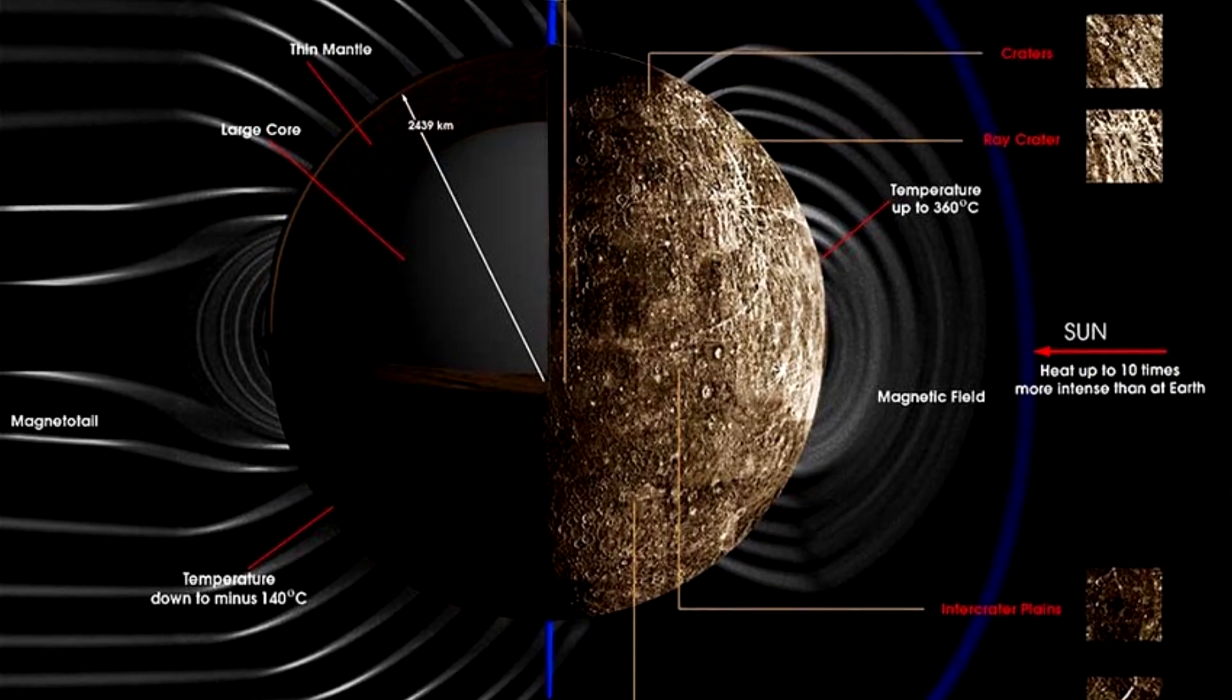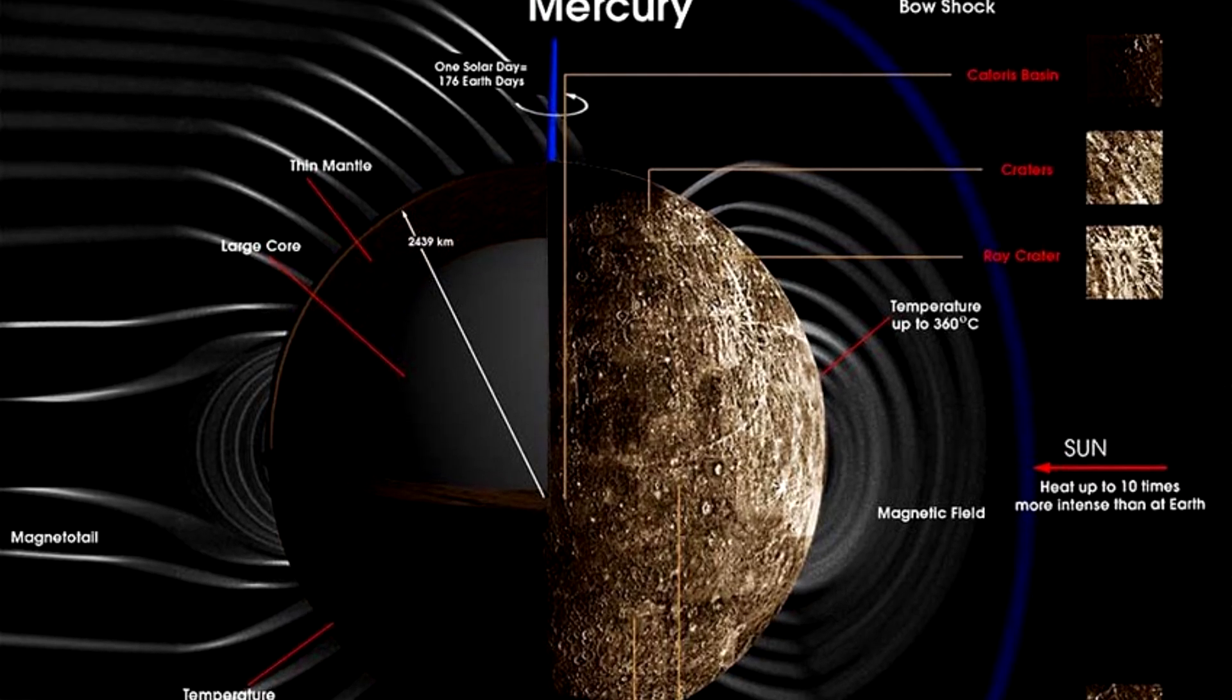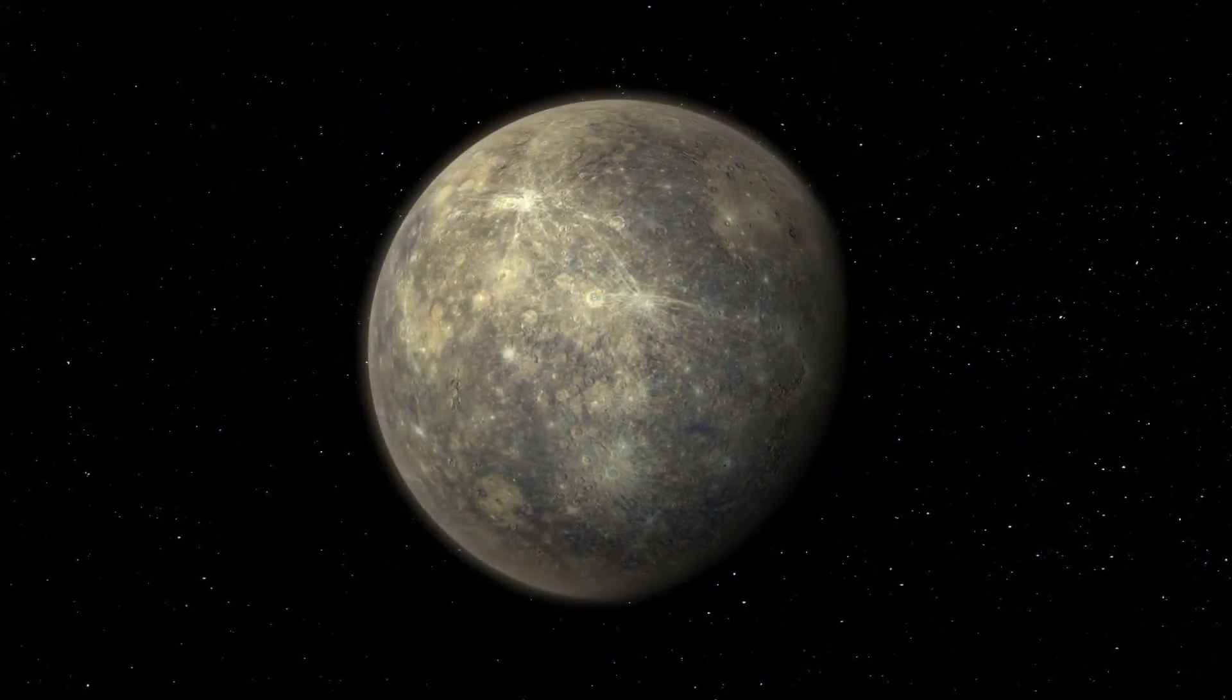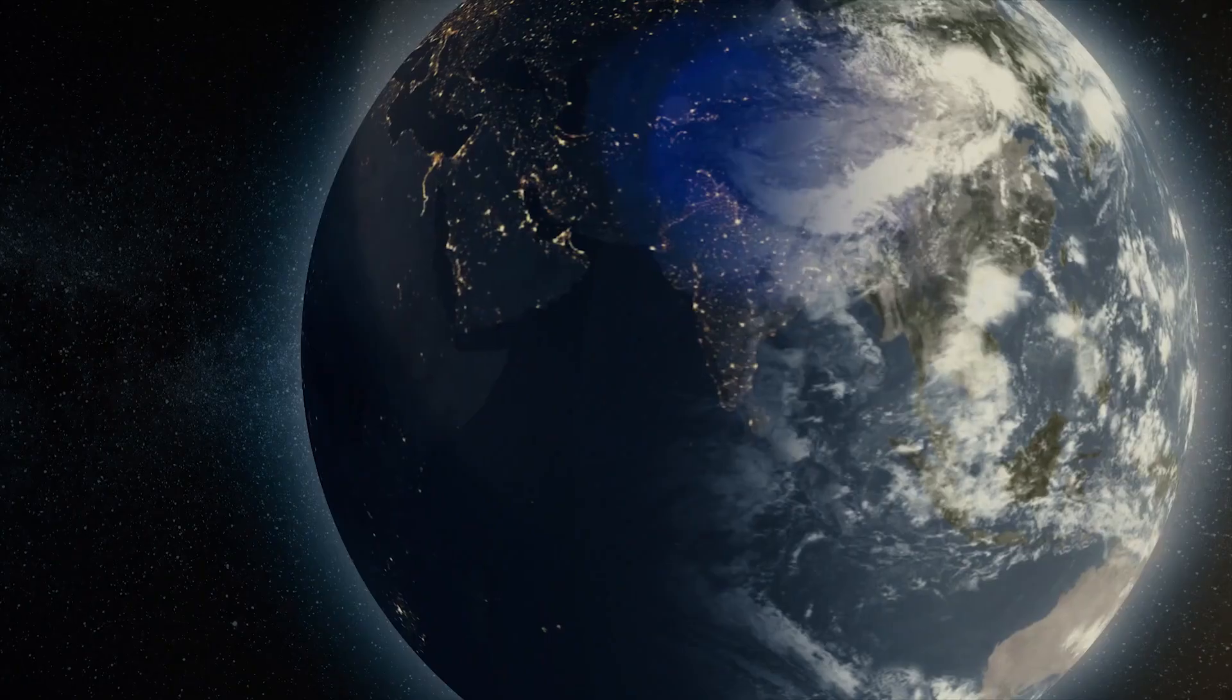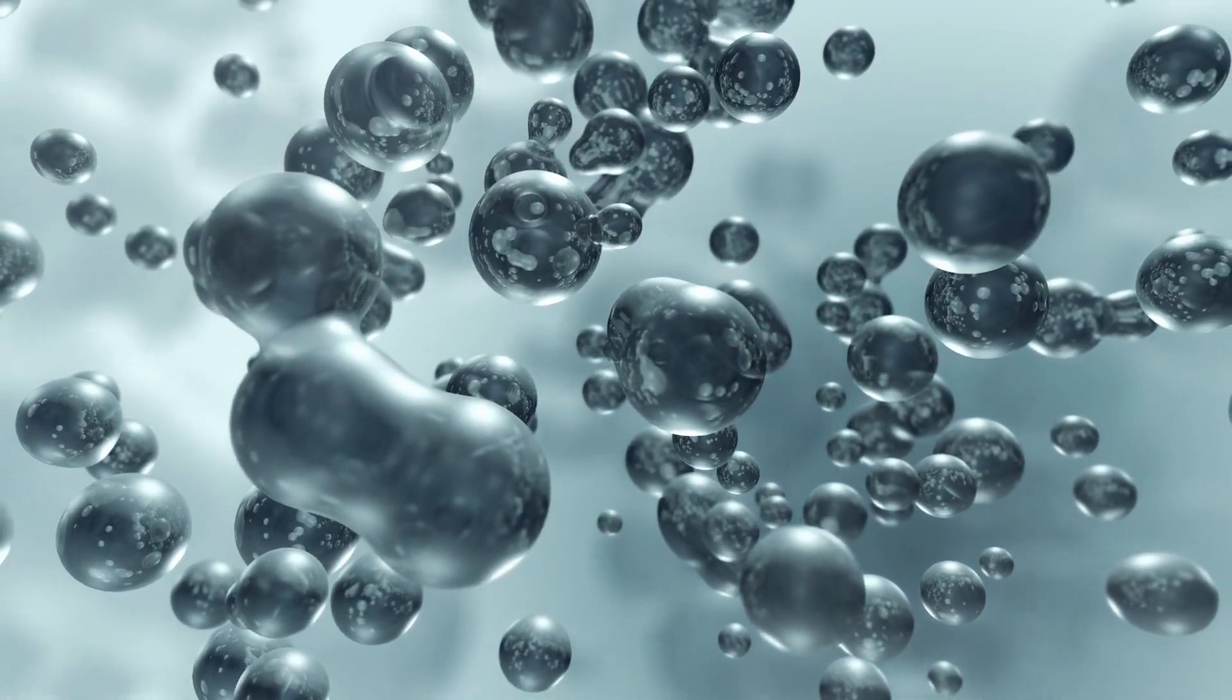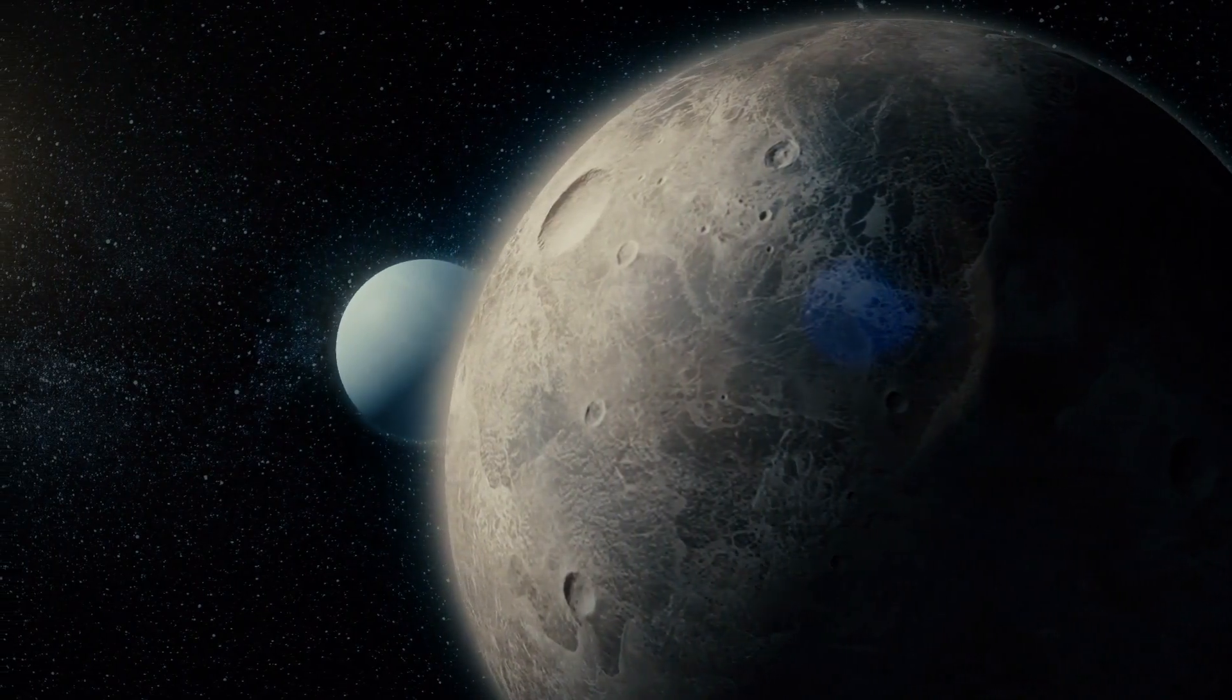The mission also found that Mercury's magnetic field was stronger in the Northern Hemisphere, a unique trait not seen in other planets. These discoveries led scientists to rethink Mercury's internal structure and formation. Mercury's magnetic field behaves differently due to its distinct core structure.